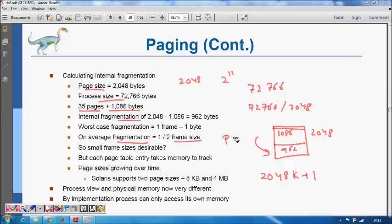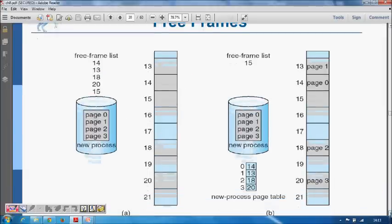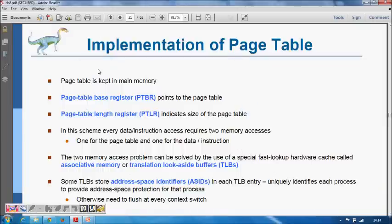To reduce internal fragmentation we could make the page size smaller, but then the page table becomes larger, which is a problem. Page sizes have actually been growing over time. The operating system maintains a list of free frames. When a new process with four pages arrives, the OS assigns free frames — for example, frames 14, 13, 18, and 20 — so page 0 goes to frame 14, page 1 to 13, page 2 to 18, and page 3 to 20.